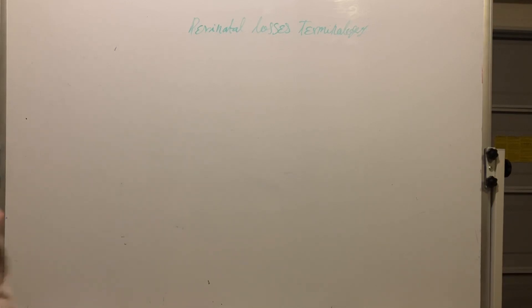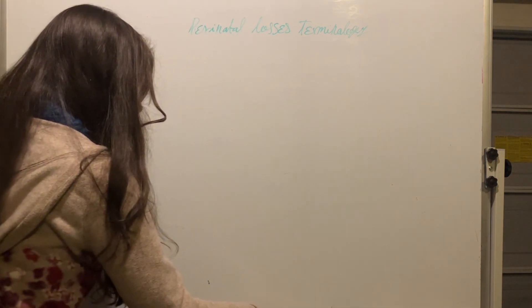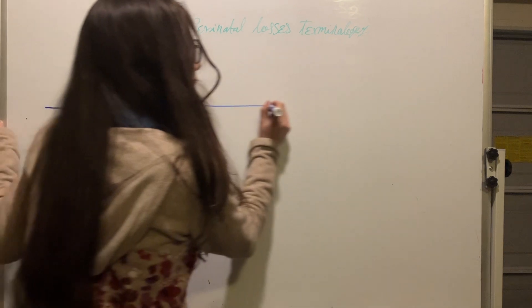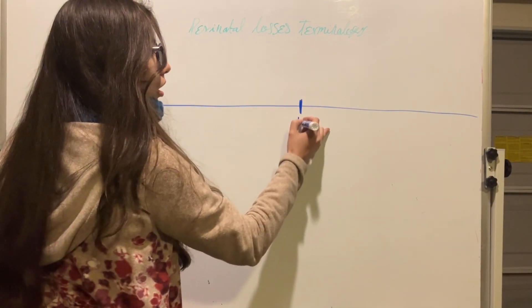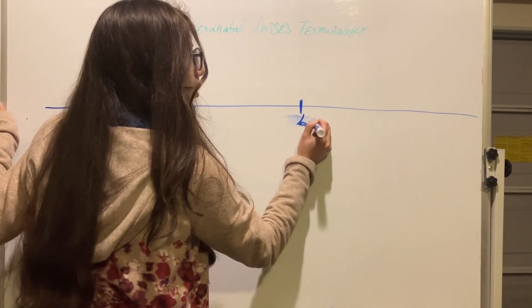Quickly we're going to see perinatal terminology. So here we draw the pregnancy duration. Let's say due date is here. This is when the baby is born.